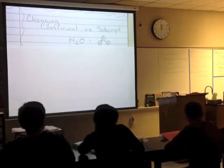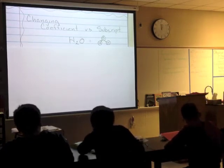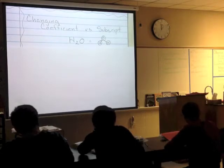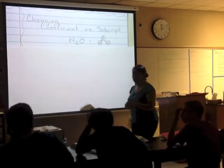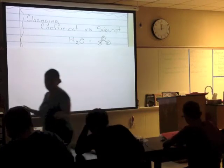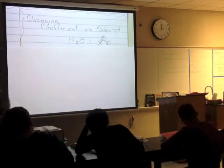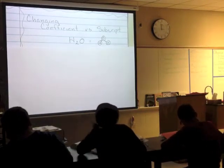Who remembers what type of bond H2O is? Is it covalent or is it ionic? Covalent. And why is it covalent? Because both of them are non-metals. Very good — because both of them are non-metals, we know it's covalent.